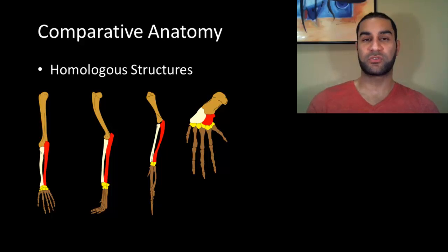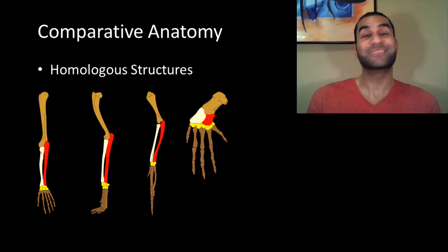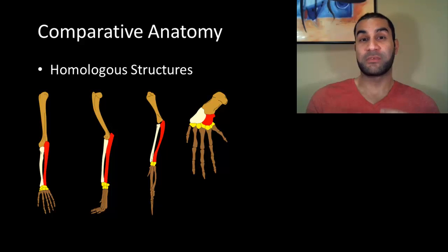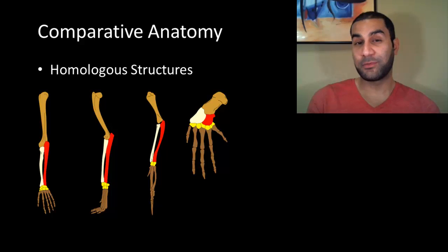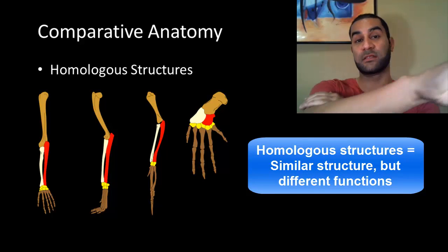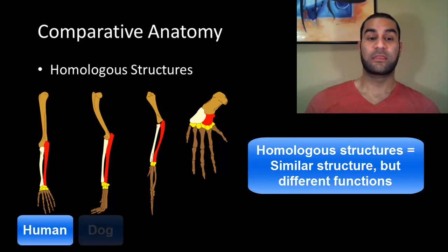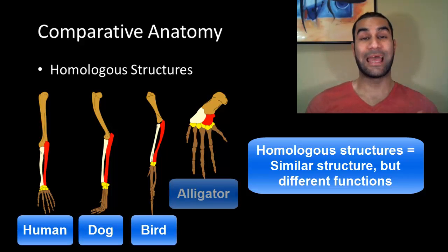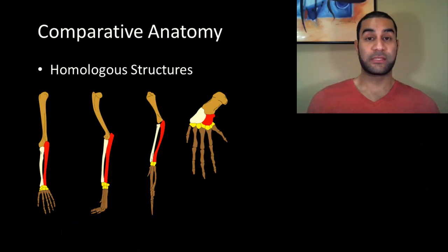When we talk about homologous structures, you may look at these four and they don't really look the same to the uneducated eye. But even though they may perform unique functions and because of that have slight adaptations that make them more successful in one environment compared to another, structurally they're the same. They all have the same basic structural component. This represents the arm of four different animal species: the human, a dog, a bird, and an alligator. Even though they have different lengths and thicknesses of their different bone structures on the forelimb, they all have the basic arm structure.